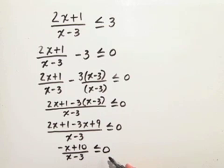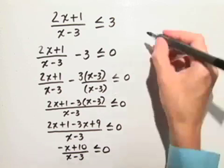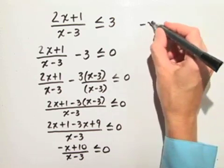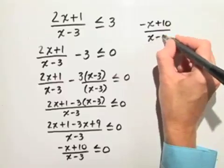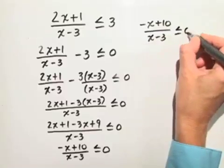Now we're actually ready to start the problem. We just prepared it right now. So we're really going to solve the inequality negative x plus 10 over x minus 3 is less than or equal to 0.